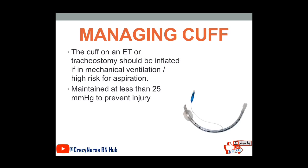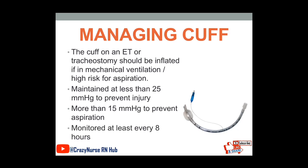We should maintain the cuff at less than 25 mmHg to prevent injury, and more than 15 mmHg to prevent aspiration. It is monitored at least every 8 hours — basically every shift. If you have an 8-hour shift in the hospital, you must monitor it at least once per shift to make sure there is still the correct amount of pressure on the cuff. In the hospital for an adult patient, we usually inject 10 ml of air, which is enough to anchor the ET tube in the patient's airway.